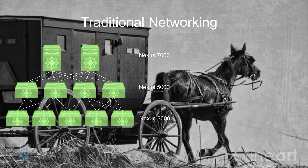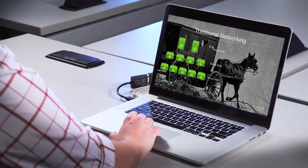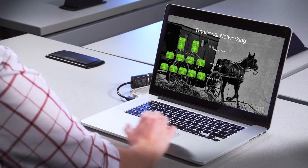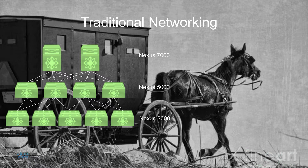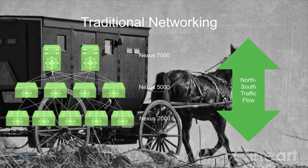These may not even be Nexus switches — they could be Cat switches or even switches from another vendor. The one thing of note is that this architecture isn't wrong, but it's built for older traffic flows, namely the north-south traffic flow, which means most of the data was coming in through a perimeter firewall, going to our endpoint devices, and then going back out through that perimeter firewall.